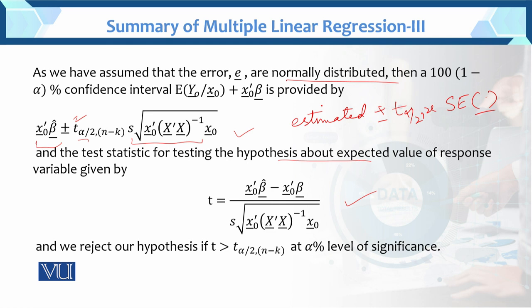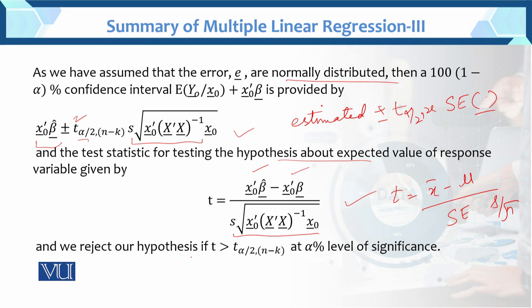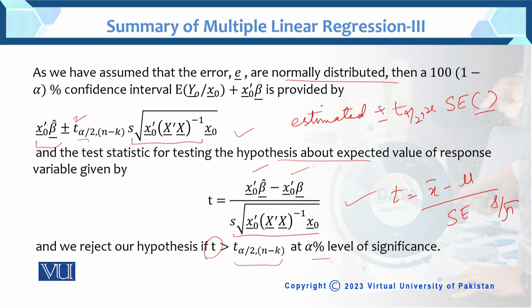The t-test statistic equals: (sample estimated value − population value) divided by the standard error — where the general formula is x̄ − μ divided by s/√n. We reject the null hypothesis h₀ if the calculated value is greater than the table (critical) value at α percent. This is the summary of multiple linear regression, where we checked estimates, variances, confidence intervals, and prediction statistics. Further numerical testing can also be done.